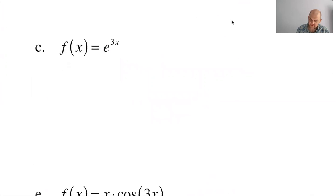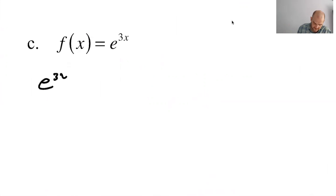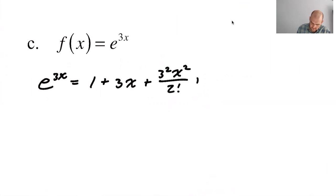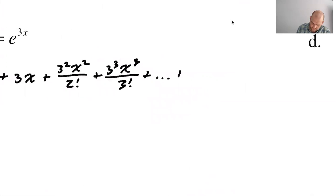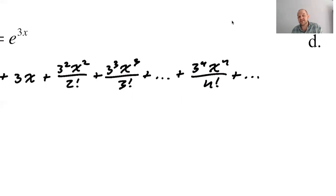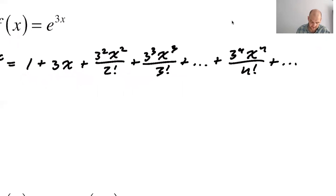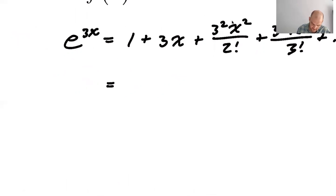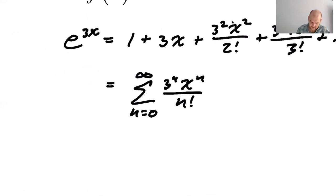Feels easy, right? It should feel that way. For e to the 3x, every x becomes 3x. So I'm going to skip the intermediate step: 3x plus 3 squared x squared over 2 factorial plus 3 cubed x cubed over 3 factorial plus dot dot dot, plus 3 to the n x to the n over n factorial plus dot dot dot. If I didn't put the dot dot dot at the end, what did I write? Not a Taylor series — I wrote a Taylor polynomial. We're writing Taylor series, so we have to do it. This we can write as the sum from 0 to infinity of 3 to the n, x to the n, over n factorial.